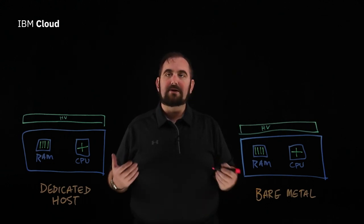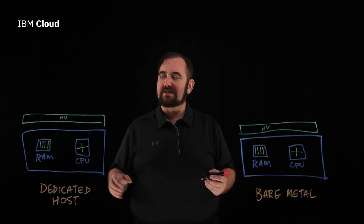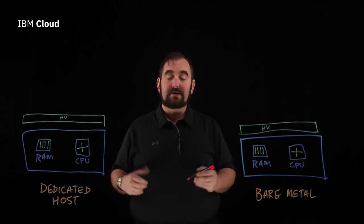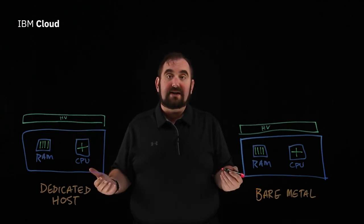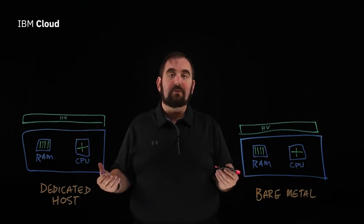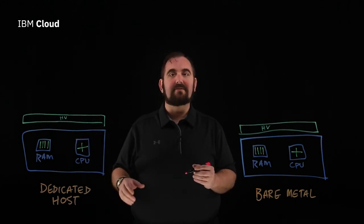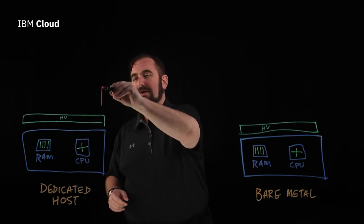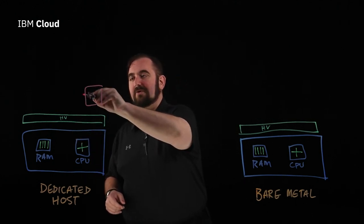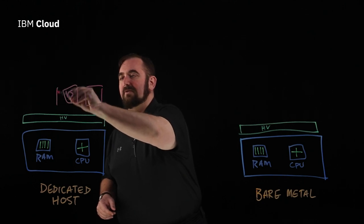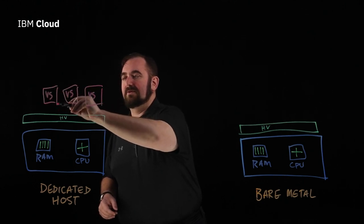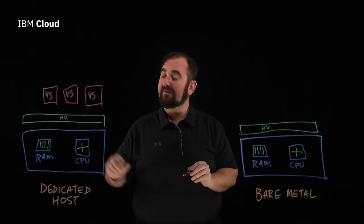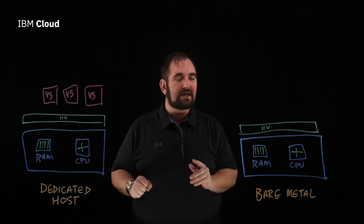When it comes time to deploy VSIs on the dedicated host, you just tell us what kind of VSIs and how many you want. We then schedule them against the hypervisor and place them on it for you — virtual server one, virtual server two, virtual server three, and so on until you fill up the box.